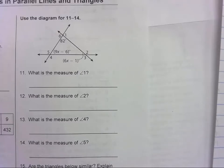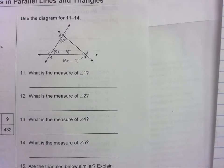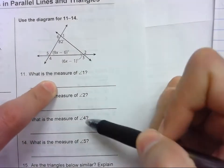Module 19 study guide, let's look at 11. What's the measure of angle 1? Angle 2, 4, 5.